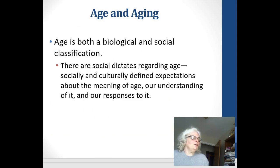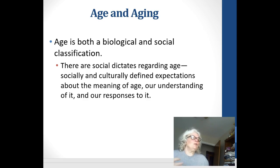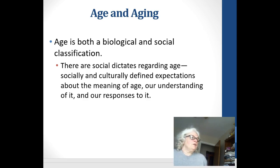We can either grow old or not grow old, and that means we die. We have to look at the fact that it will come somewhere, and these biological and social classifications come together to dictate how we are treated in life and what social and cultural expectations define about age — what we fear about age and our understanding of it.